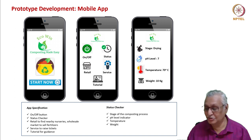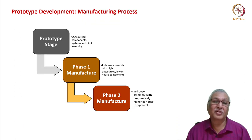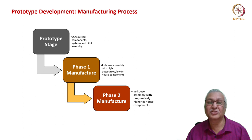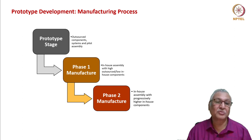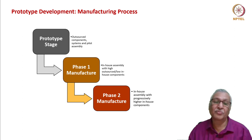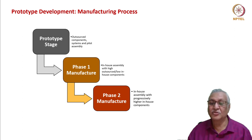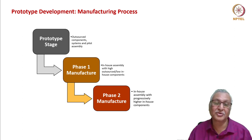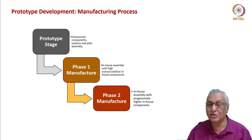The app specifications include: on/off button, status checker, retail to find nearby nurseries, wholesale market to sell fertilizers, service to raise tickets, and tutorial for guidance. The manufacturing process has three stages: prototype stage (outsource most components, conduct only pilot assembly); phase one manufacture (in-house assembly with high outsourced and low in-house components); phase two manufacture (in-house assembly with progressively higher in-house components). A startup cannot do everything in-house — getting to market first and right is a cardinal principle.